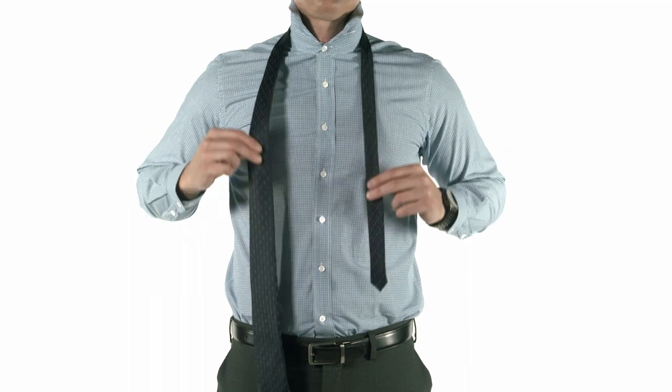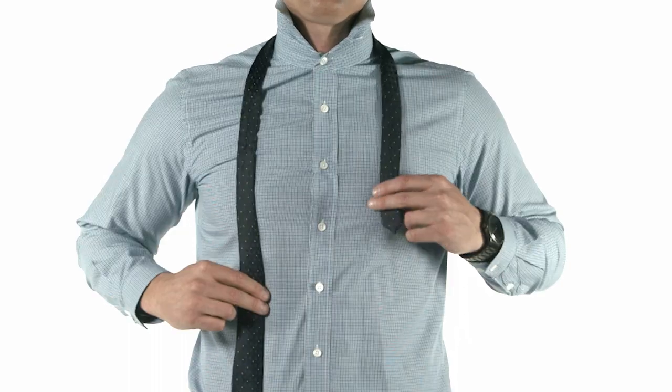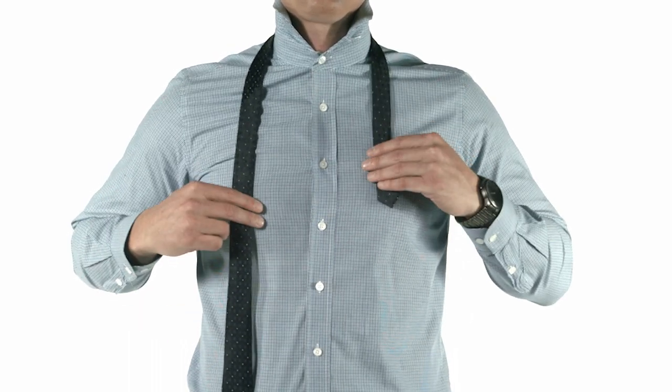Start with a tie around your neck. Place the wide end on the right and drape it significantly lower than the narrow end on the left, like so.